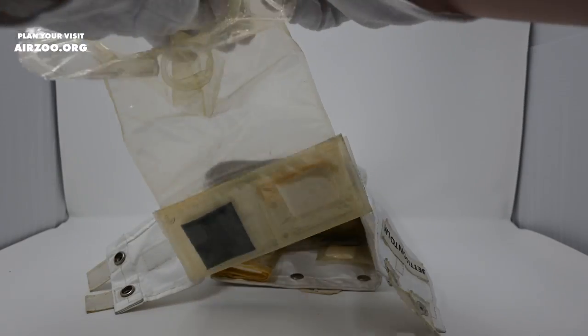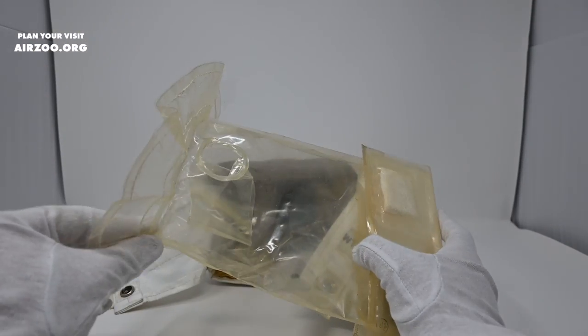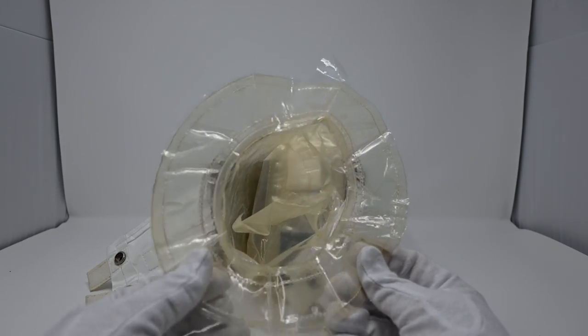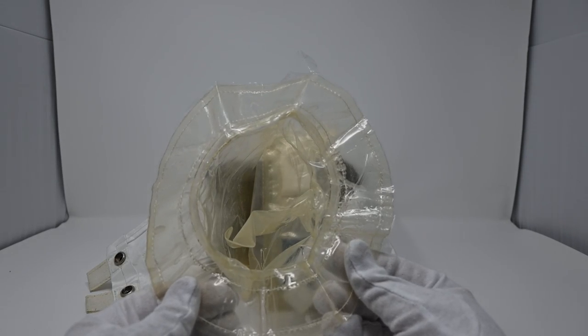This is the bag, the defecation bag the astronauts would use. You can see it's got this nice cuff. This was an adhesive so it would stick to the butt of the astronaut.